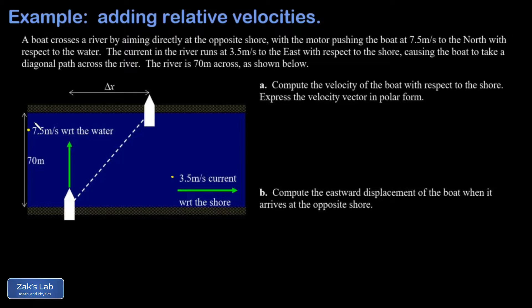Pushing the boat 7.5 meters per second with respect to that water, the river is 70 meters across. In part a of the problem we're going to find the velocity of the boat with respect to the shore, and in part b we're going to find this eastward displacement delta x as the boat crosses the river, aiming exactly at that opposite shore but getting dragged to the east by the current.